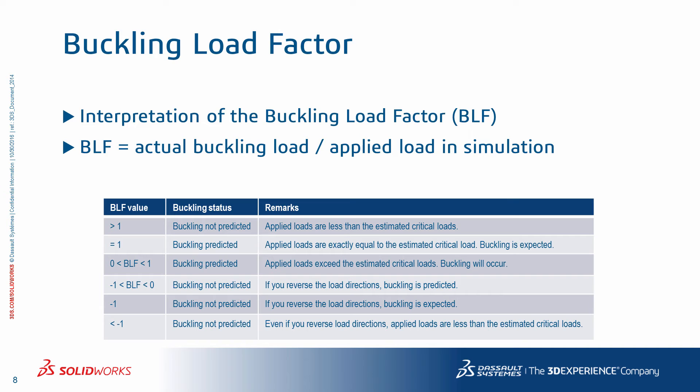A buckling load factor equal to 1 means the applied loads are exactly equal to the estimated critical load — buckling is expected. A buckling load factor between 0 and 1 means the applied loads exceed the estimated critical loads, so buckling will occur. The unlikely scenario of a negative buckling load factor means that buckling will not occur under the current load directions, but if you reverse the direction of the applied loads, buckling may be an issue depending on the load magnitudes.